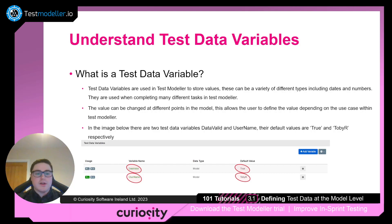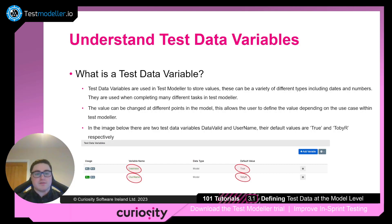What is a test data variable? Test data variables are used within test model to store values. These can be a variety of different values including dates and numbers, and they are used when completing many different styles of test model. The value can be changed at different points within the model, allowing users to define the value depending on the use case. For example, two test data variables — 'data valid' and 'username' — with default values of true and Toby R respectively.